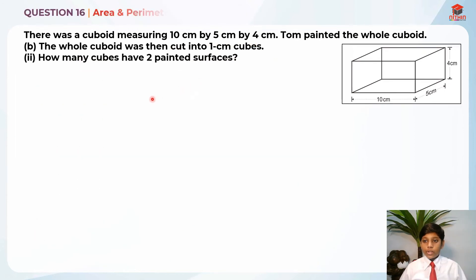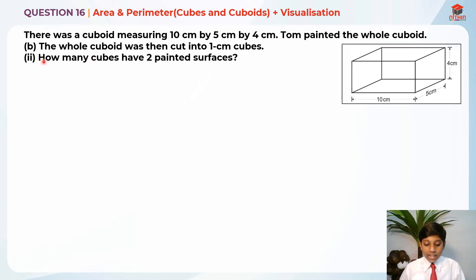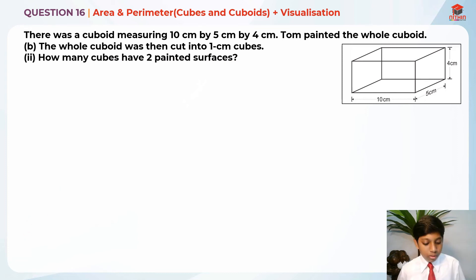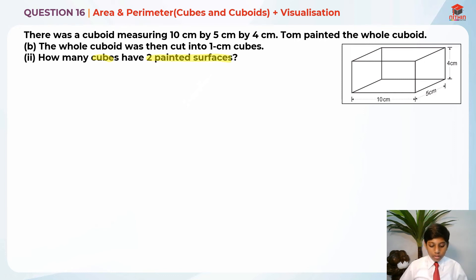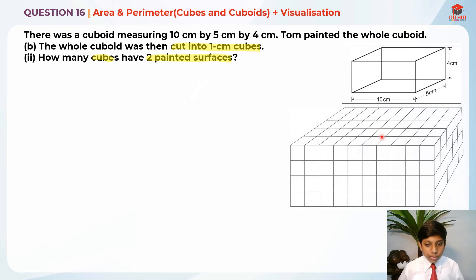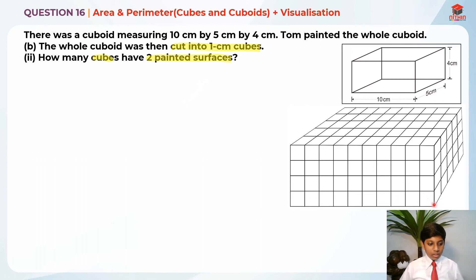Now let's do Part B(ii). They're asking how many cubes have two painted surfaces. They cut the cuboid into 1 cm cubes, so the dimensions remain 10 cm by 5 cm by 4 cm.